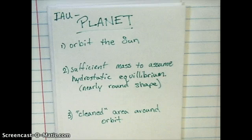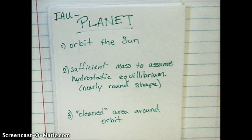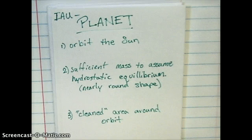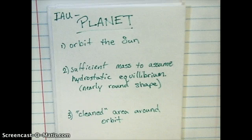One, it must orbit the Sun. Two, have a large enough mass so that it can assume hydrostatic equilibrium — meaning it can form a round shape because of its own mass, like Earth and the rest of the planets. And three, have cleared, basically absorbed or pulled in the rocks and matter around its orbit in space. That's where Pluto begins to have problems. It's not really a round shape — more like a potato or an egg — and it hasn't really cleared the area around it. There are many smaller objects like Pluto, and even larger ones, still remaining in the area.